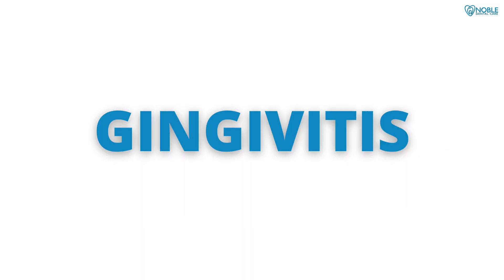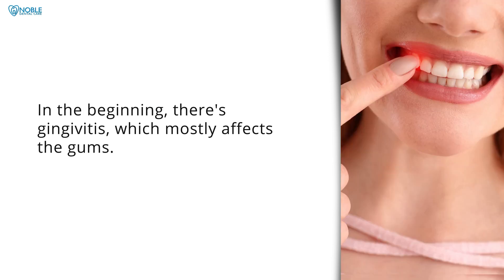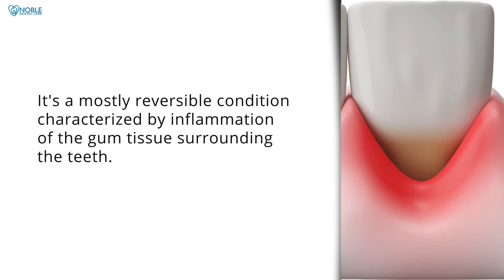Gingivitis. The two phases of gum disease — gingivitis and periodontitis — are very different from one another and have varying effects on the mouth and teeth. In the beginning there's gingivitis, which mostly affects the gums. It's a mostly reversible condition characterized by inflammation of the gum tissue surrounding the teeth.